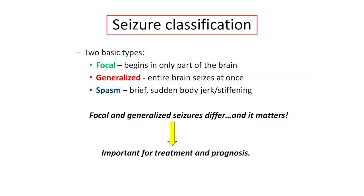To classify seizures into two basic types — focal and generalized. A focal seizure means it starts in one part of the brain and may spread from there, whereas a generalized seizure starts in both hemispheres at the same time. One is not necessarily worse than the other — they're just different.